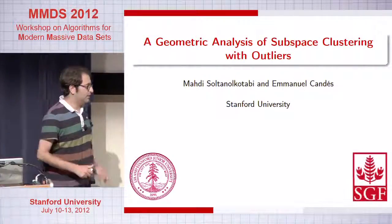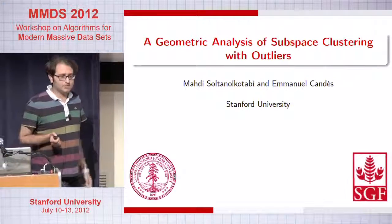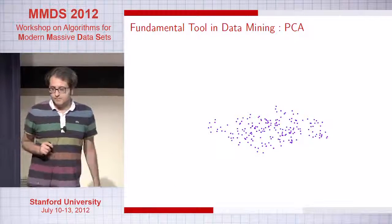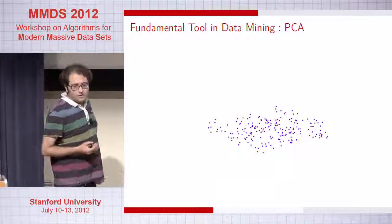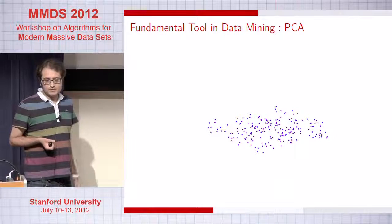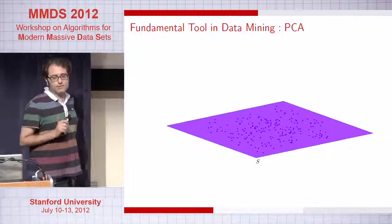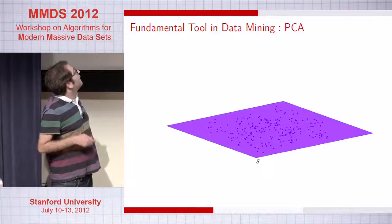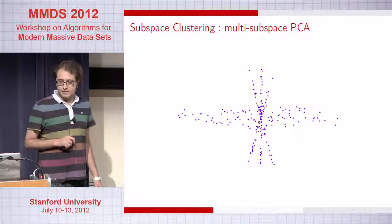Today I'm going to talk about subspace clustering, joint work with my advisor Emmanuel Candès. What is subspace clustering? Let me begin with a simpler example. One of the most fundamental tools in data mining is that when you have a bunch of points living near a lower dimensional subspace, you want to find the best fit to those points — this is known as PCA. A natural but useful generalization is when you don't have points living near a single subspace, but near a union of multiple subspaces.